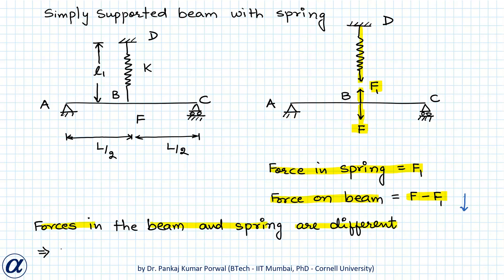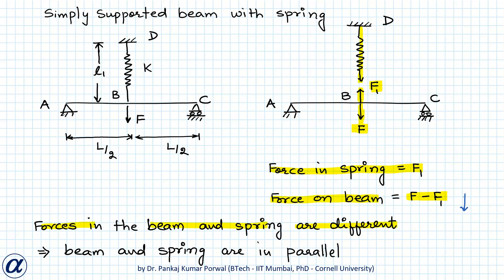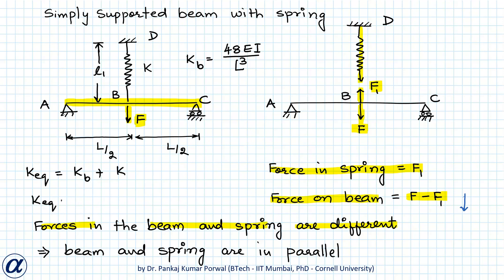Since the beam and spring have the same displacement but different forces, this implies that the beam and spring are in parallel. Because they are in parallel, we can easily find their equivalent stiffness. The stiffness of the simply supported beam acted upon by force F at the mid-span is kb = 48EI / L³. Since they are in parallel, the equivalent stiffness is k_eq = 48EI / L³ + k.